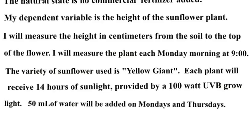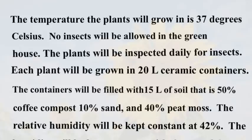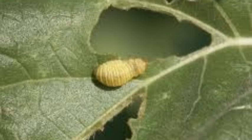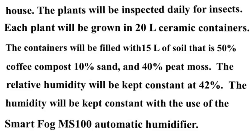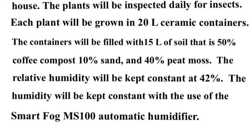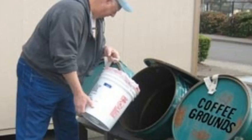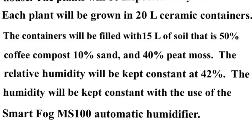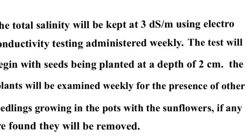I'm going to measure the plant every Monday morning at nine o'clock from the soil to the top. The type of sunflower I'm going to use is a yellow giant. I'm not going to allow any insects to be in the greenhouse — I'll check every week to make sure those are picked off, whether they're helpful bees or sunflower beetles. I'm going to grow them all in the same size container: 20-liter ceramic pots. My soil mix is going to be the same: 50% coffee grounds turned into compost, 10% sand, and 40% peat moss, all mixed together.